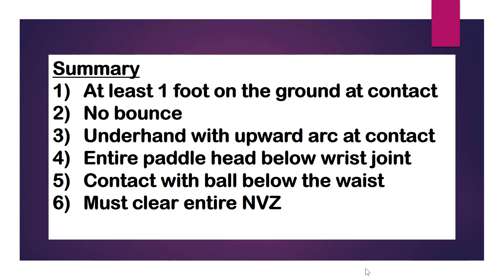Here's a quick six-point summary. One: one foot on the ground at contact. Two: no bounce — we must hit the ball out of the air. Three: I must use an underhand upward arc motion. Four: the entire paddle head must be below the wrist joint. Five: contact the ball below my waist. Six: the ball must clear the entire non-volley zone in the serving motion.